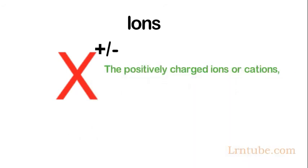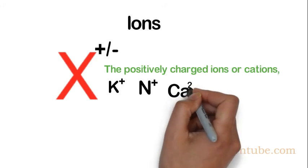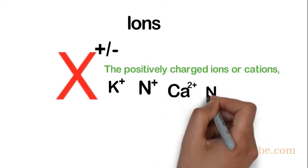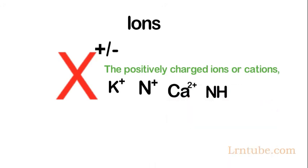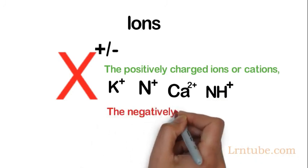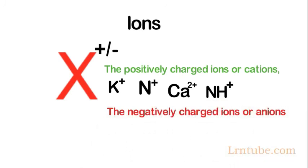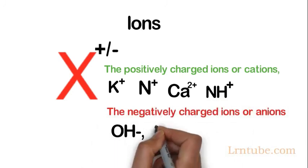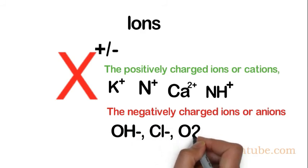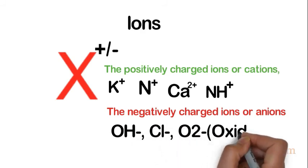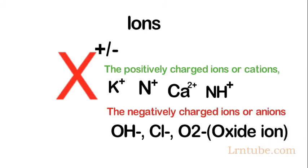Positively charged ions are also called cations. Examples include potassium ion, sodium ion, calcium ion, and ammonium ion. Negatively charged ions are called anions.